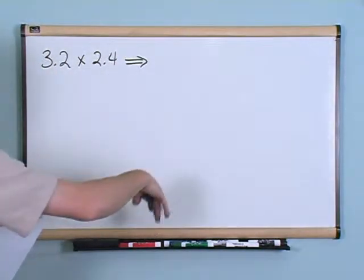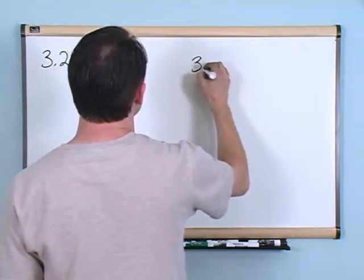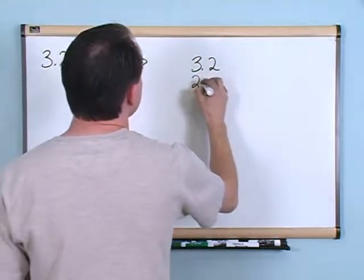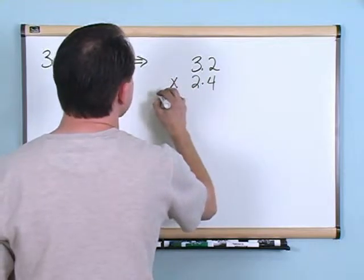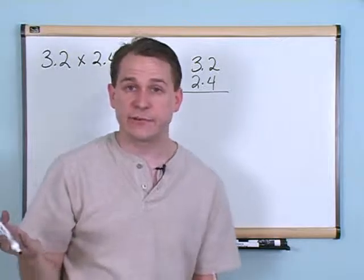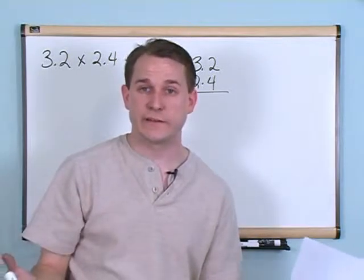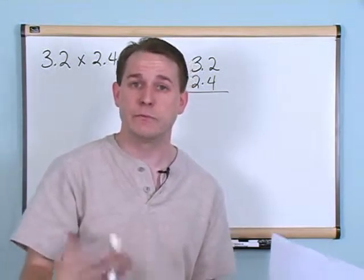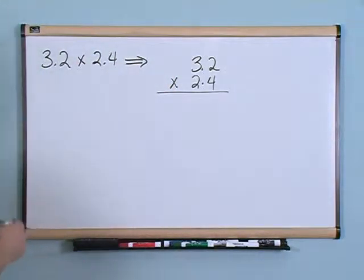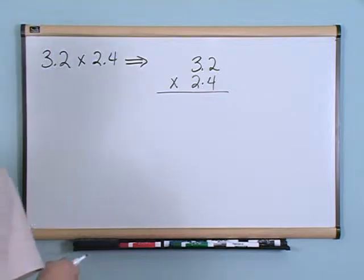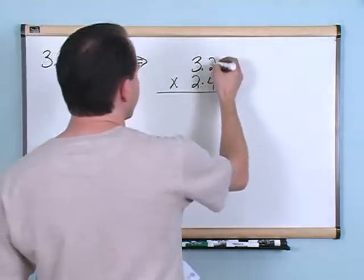What if you had a problem like 3.2 times 2.4? You're going to multiply those together. Write the problem the same way you usually do — 3.2 and 2.4. For now, whenever you do this, just ignore the decimal until the end of the problem.